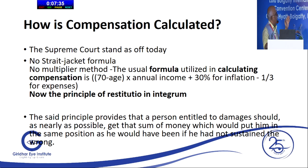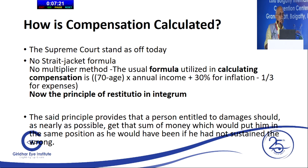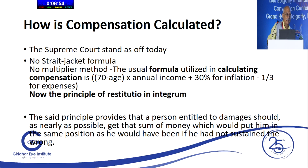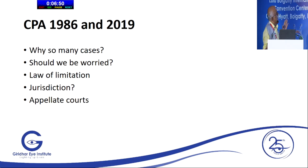Compensation is calculated based on the patient's profile — it is not a straight-jacket formula. The highest compensation is for the youngest patient, which is ROP. In ophthalmology, the highest compensation awarded was nearly 2 crores for ROP, because the court calculates what the child would have earned over 50 years. Since endophthalmitis usually involves patients in their 50s, 60s, and 70s, the compensation amount will not be as high. There are many new developments after the Consumer Protection Act 2019.